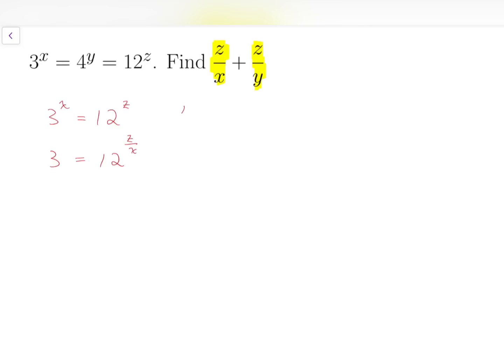Using a similar approach, starting from 4 to the power of y equals 12 to the power of z, we can do the same thing and obtain that 4 equals 12 to the power of z over y. Then, to add them up,